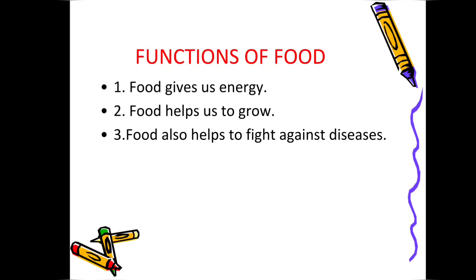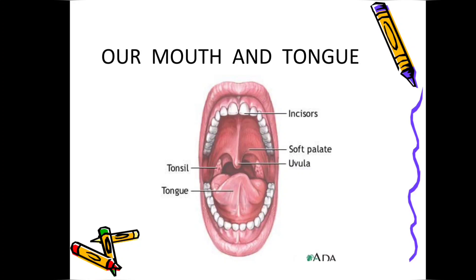When you take food, it enters our body through our mouth. From this picture you can see the interior parts of our mouth. Teeth are there inside our mouth, and the front teeth are called incisors — two on the upper jaw and two on the lower jaw, these four teeth are called incisors.